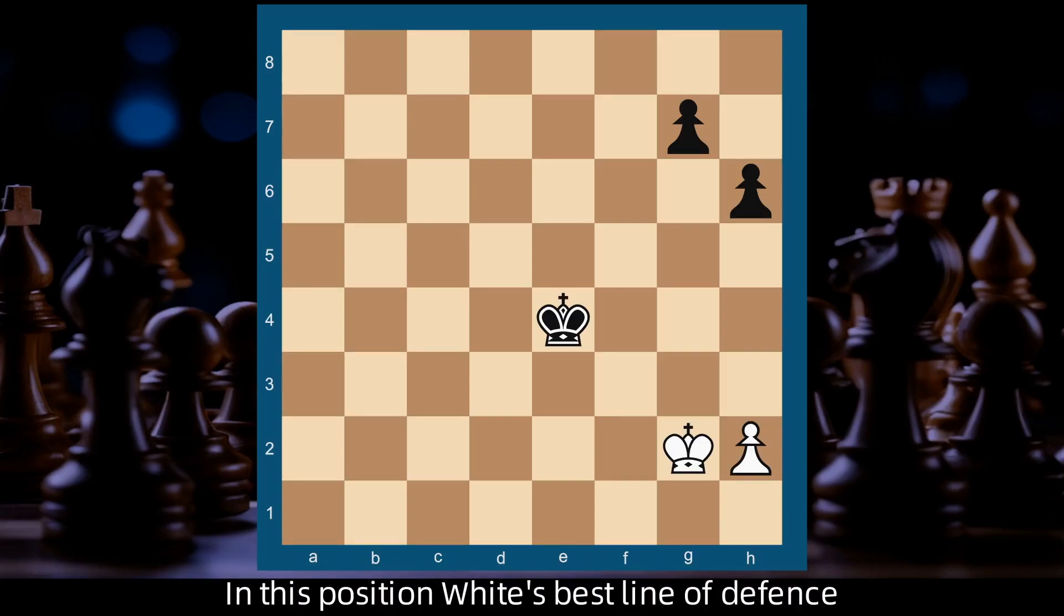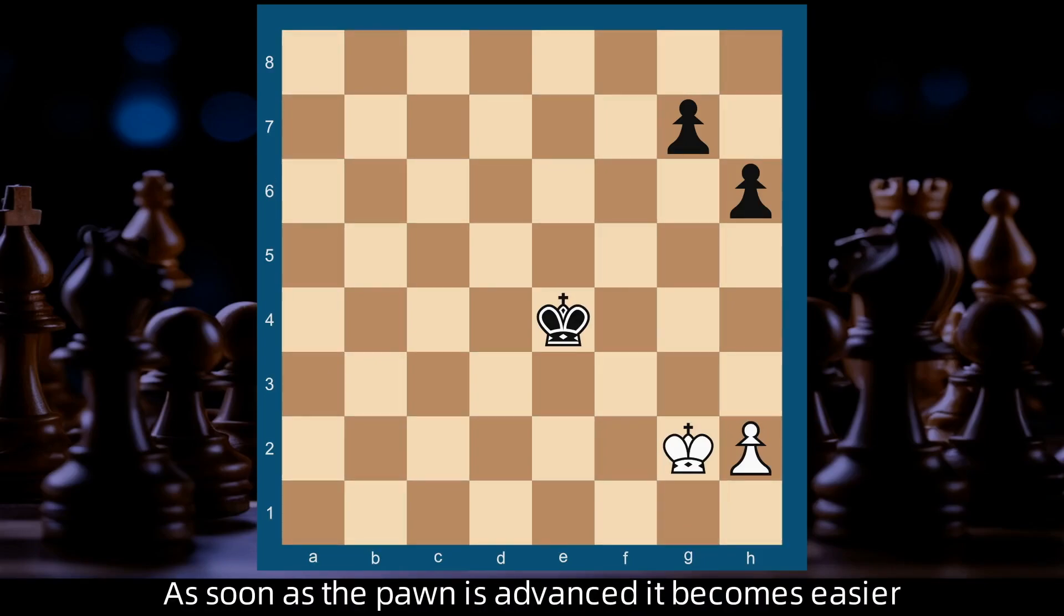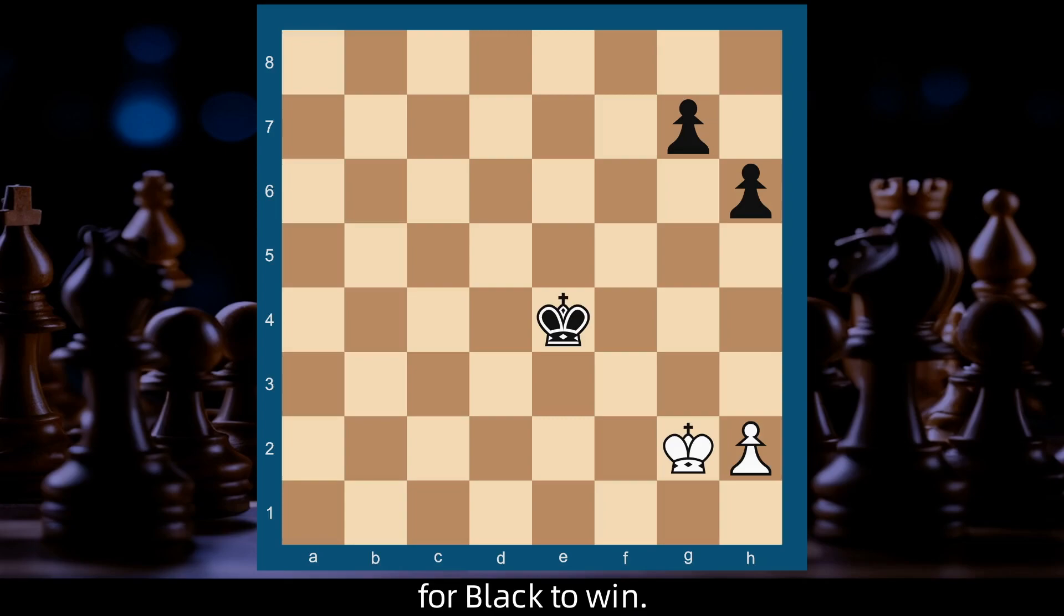In this position, White's best line of defense consists in keeping his pawn where it stands at h2. As soon as the pawn is advanced, it becomes easier for Black to win. On the other hand, Black's plan to win...